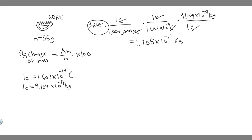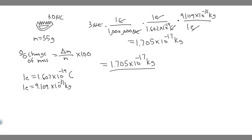So 3 microcoulombs converts to 1.705 times 10 to the minus 17 kilograms. This is the change in mass, because we're adding these electrons. So the change in mass is 1.705 times 10 to the minus 17 kg. We divide by the initial mass of 35 grams, which we need to convert to kilograms: 35 grams equals 0.035 kilograms, since there are 1,000 grams per kilogram.